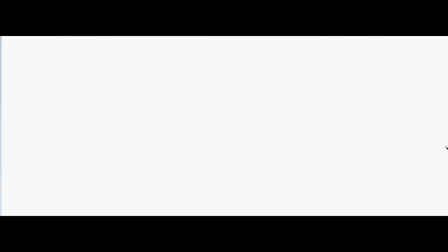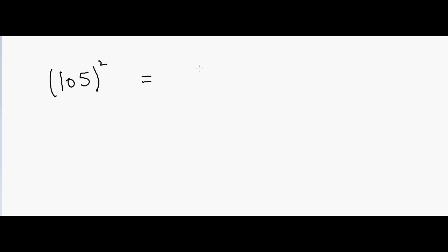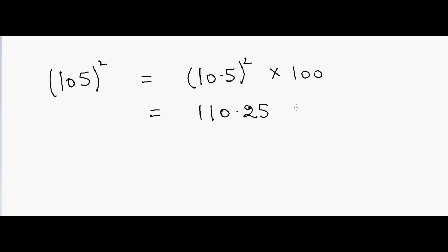Let's do another example. Suppose if I have 105 squared. In that case, it will be 10.5 squared times 100. We know the answer for 10.5 squared is 110.25. And if we multiply that by 100, the answer will be 11025.